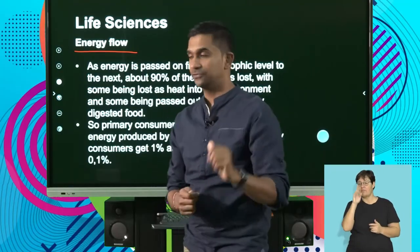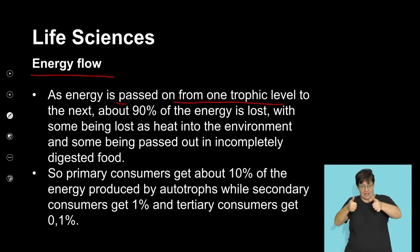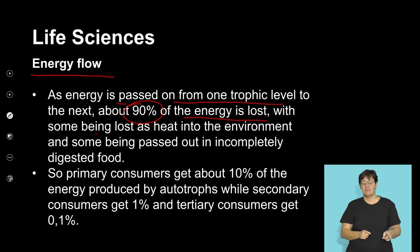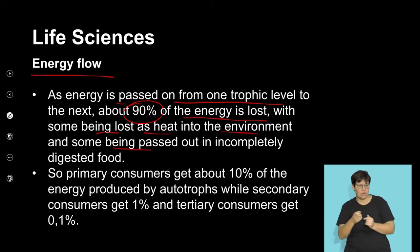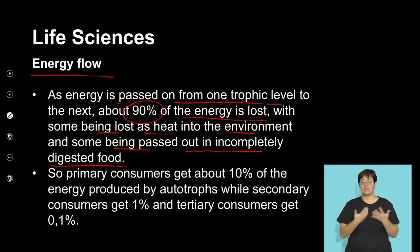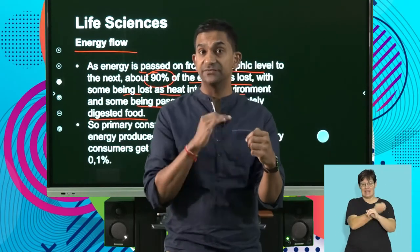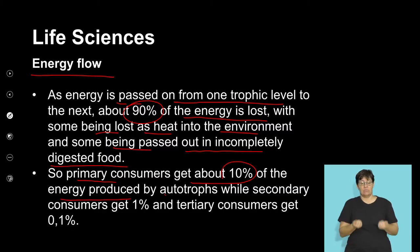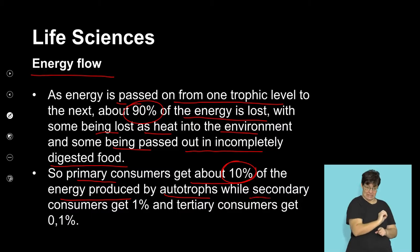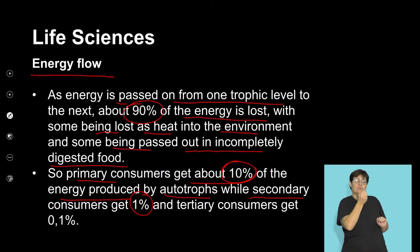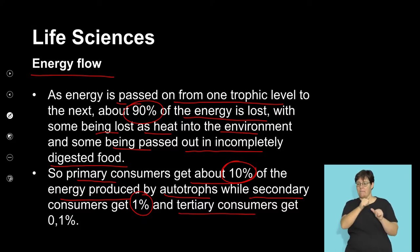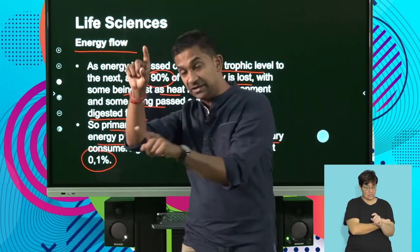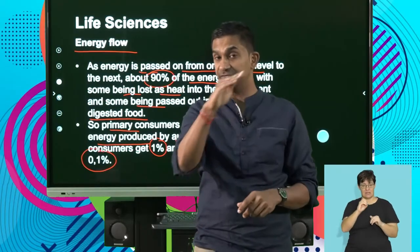Only about 10% of energy is available to the next trophic level. Primary consumers get about 10% of energy produced by the autotrophs, secondary consumers get 1% of the energy initially produced by autotrophs, and tertiary consumers get approximately 0.1%. As the complexity increases, the amount of energy available significantly decreases — by a ratio of 10% at every trophic level.